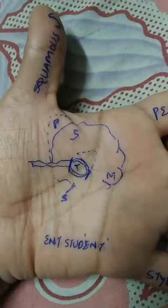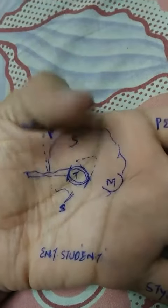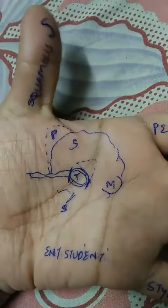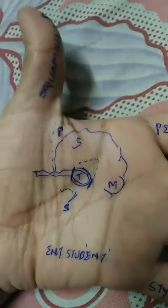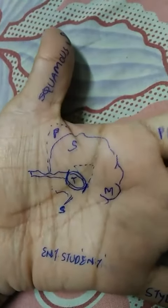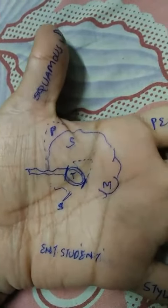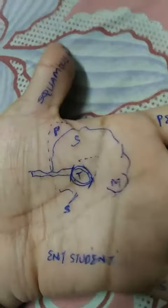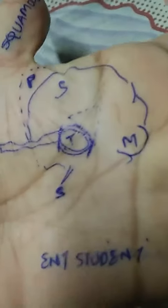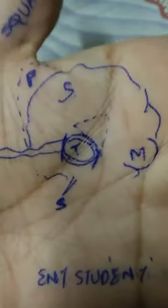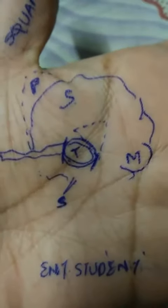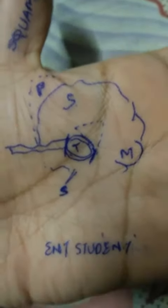S for squamous, here you could see. P for petrous. M for mastoid, you could see here. S for styloid, you could see here. T for tympanic ring, upon which the tympanic membrane lies.